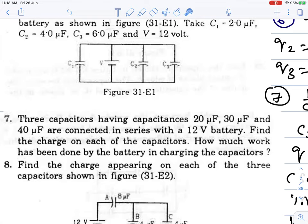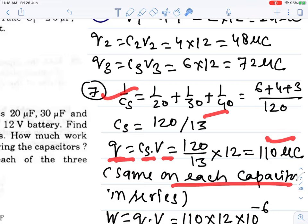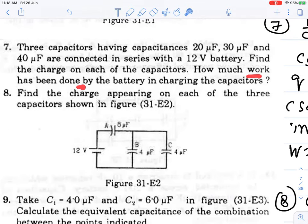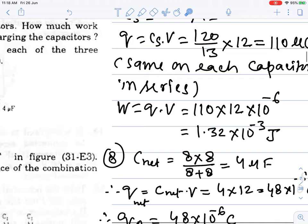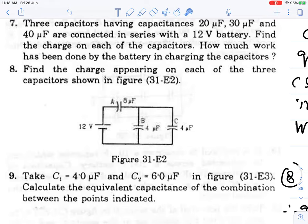Three capacitors having capacitances 20 µF, 30 µF and 40 µF are connected in series to a 12 V battery. Find the charge on each capacitor. In series, charge is the same on each. Find the net capacitance using the series formula: 1/C_net = 1/C₁ + 1/C₂ + 1/C₃. Then Q_net = C_net × V. This Q is the same on each capacitor in series. How much work is done by the battery? Work equals Q_net × V.